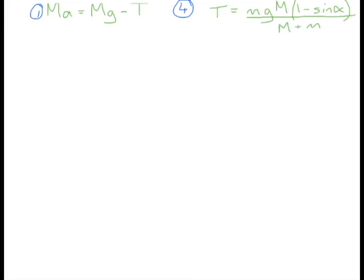We're nearly there. The final part of this question is what are the conditions for equilibrium? So when we're in equilibrium our acceleration equals zero. So we can say that rearranging equation 1 there we can say that Mg equals T.